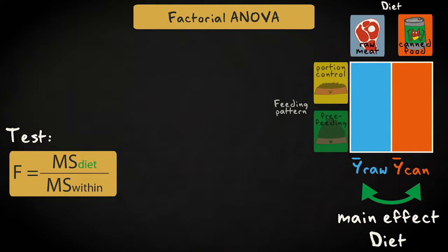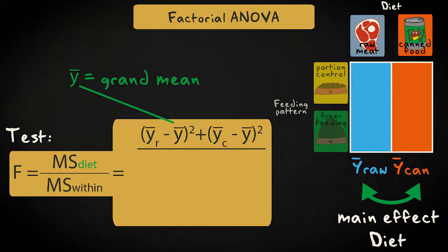The only thing different from one-way analysis of variance is that we have to keep careful track of what means we're comparing. For the main effect of diet, the corresponding F-test numerator, the between-group variance, is determined by calculating the sum of squares for the diet groups compared to the grand mean, and dividing by the appropriate degrees of freedom, the number of diet groups minus one.